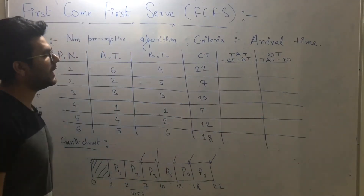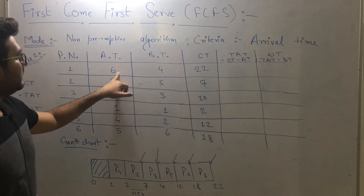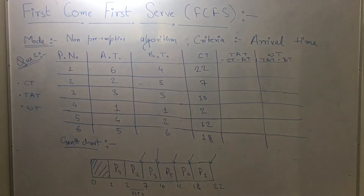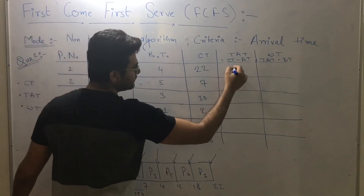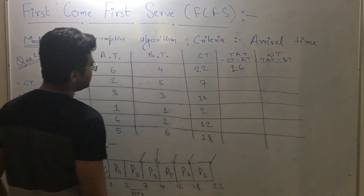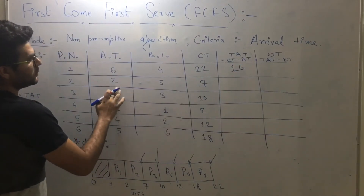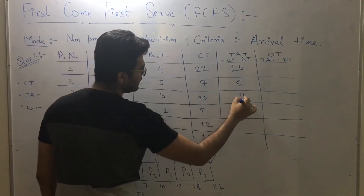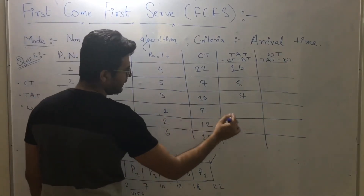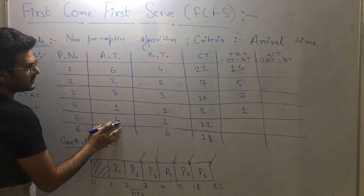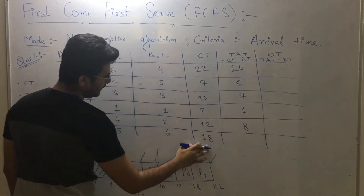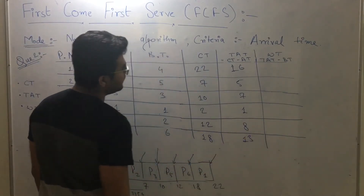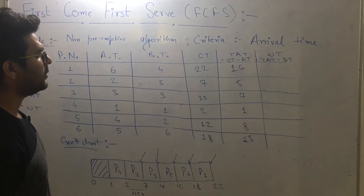We will now calculate turnaround time using the formula: CT minus AT. For process one: twenty-two minus six equals sixteen units. Process two: seven minus two equals five units. Process three: ten minus three equals seven units. Process four: two minus one equals one unit. Process five: twelve minus four equals eight units. Process six: eighteen minus five equals thirteen units.